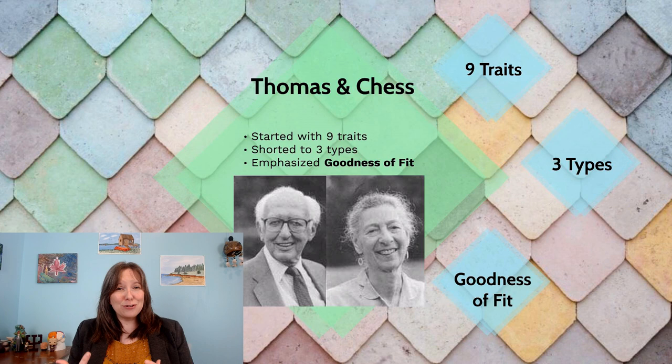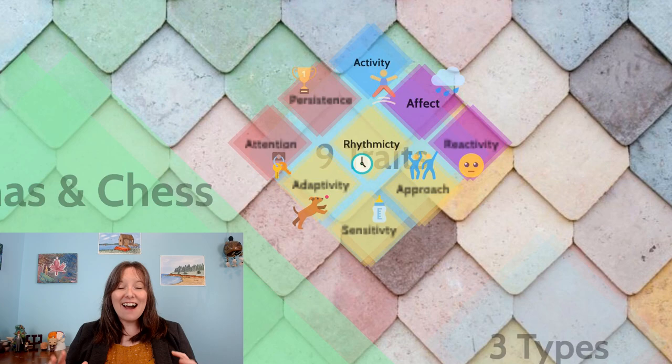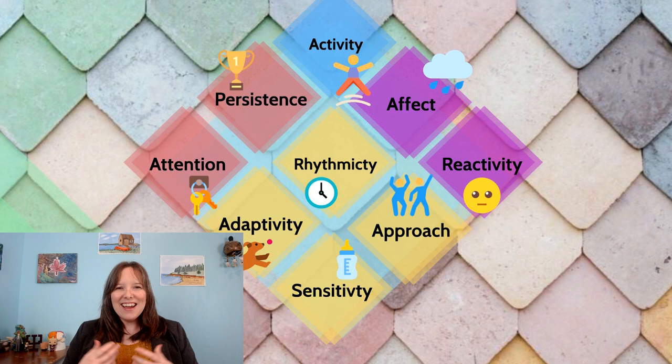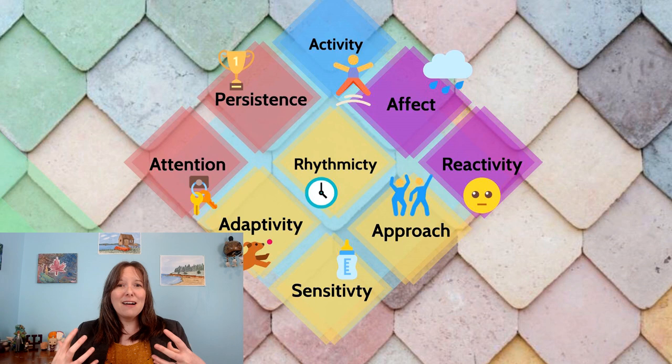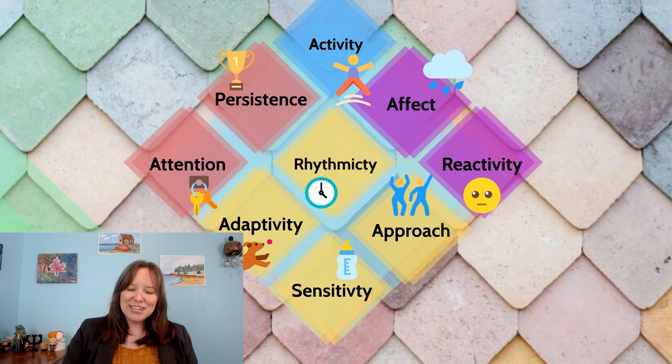Before we talk about goodness of fit, it's important to understand what we're trying to fit into the environment. When this theory first started, it was thought there were nine traits or dimensions of temperament. There's a lot of overlap — attention and persistence overlap, affect and reactivity overlap, and adaptivity, approach, and sensitivity may also contain substantial overlap. We'll define each of the nine dimensions.